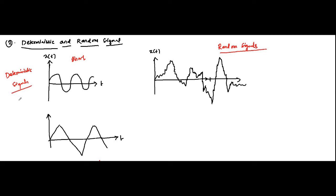Examples of deterministic signals include the basic signals: sine, cosine, exponential, rectangular pulse function, triangular pulse function, step function, ramp function, and parabolic function. They are all deterministic signals because they can be represented with the help of a mathematical equation, which makes them easier for analysis.